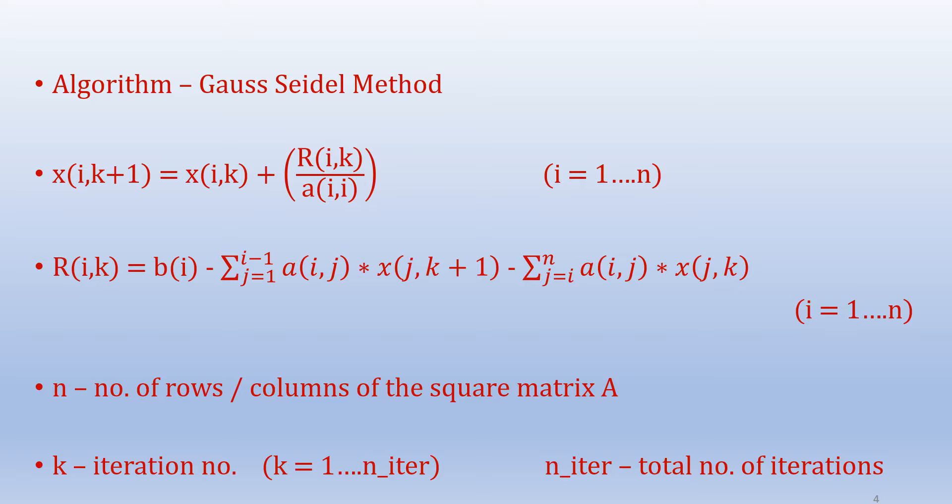N represents the number of rows and columns of the square matrix A. K represents the iteration number. K varies from 1 to n_iter where n_iter represents the total number of iterations.